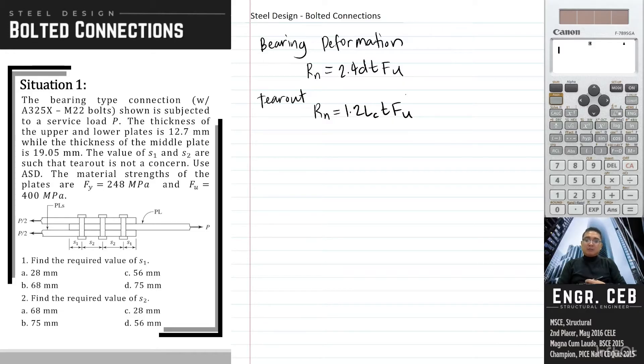According to the problem, the values of S1 and S2 are such that tear-out is not a concern. So if that is the case, the capacity of tear-out should be greater than the capacity of bearing deformation in order that tear-out will not govern. Because as what we have said earlier, whichever is the lesser of the two will govern. So therefore, in order for tear-out not to govern, it should be greater than the value of 2.4dtFu.